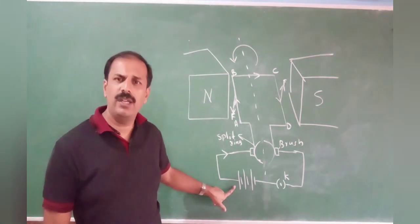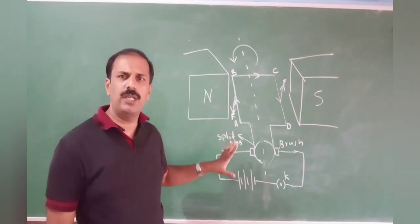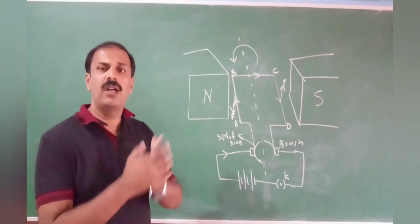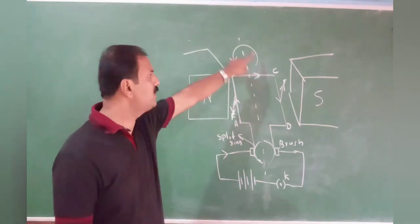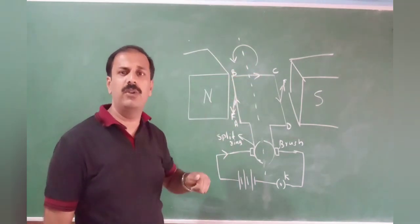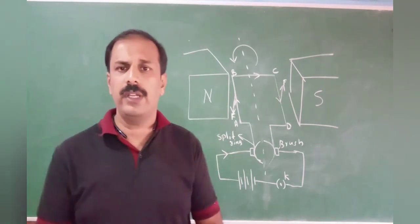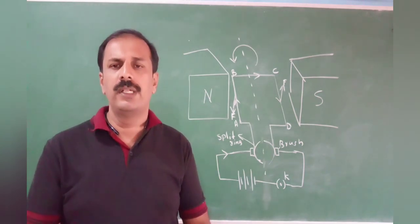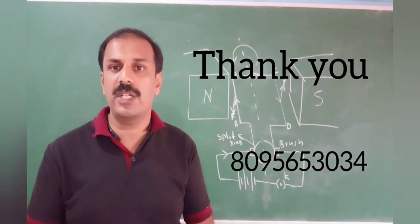This is a DC motor. We have AC motors also, but we are not discussing that now. You can draw the diagram yourself, apply Fleming's left-hand rule, and check whether the motion I showed here is what you are getting. Thank you for now. After this, we will go for the next part, which is about Fleming's right-hand rule.